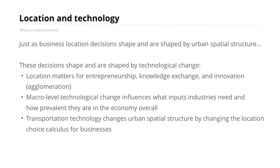Transportation technology also influences these location calculations. Transportation technology changes urban spatial structure by changing the location choice calculus for individual businesses. This is very evident in urban planning history. In location theory, the location component is fundamentally tied to transportation and to the transportation technology available or necessary for a given industry. This is another avenue through which technological change ends up influencing urban spatial structure.